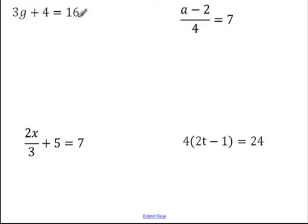3g plus 4 equals 16. First, I need to deal with the plus 4, so I'll subtract 4 from both sides. That leaves me with 3g on the left and 16 minus 4 is 12 on the right. Then I have 3g equals 12, so I'll divide both sides by 3. That gives me g equals 4.